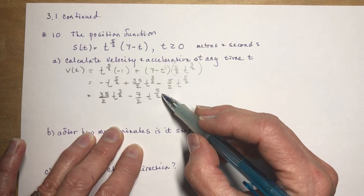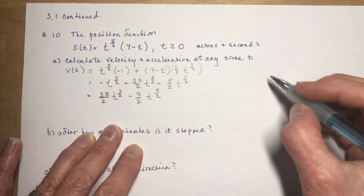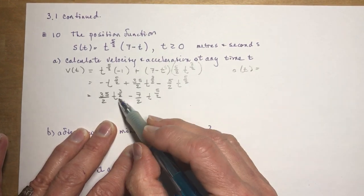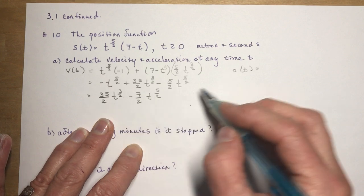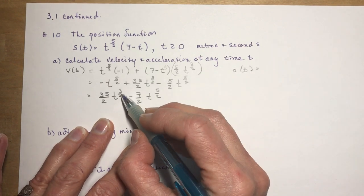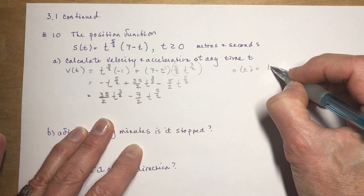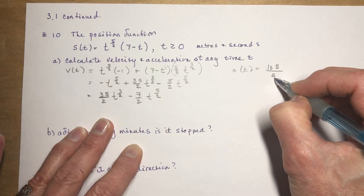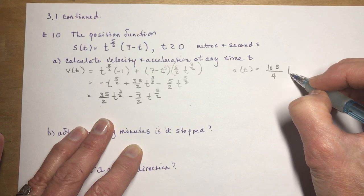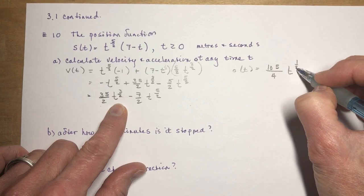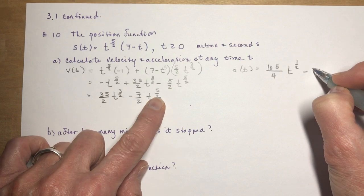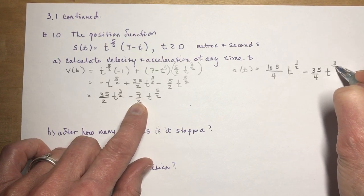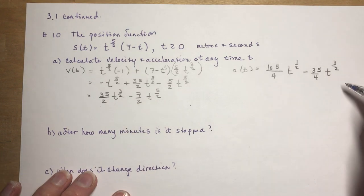Now I want to find the acceleration, which is the derivative of the velocity. These are two separate terms with no product rule needed, so it's straightforward. Differentiating gives: (105/4)t^(1/2) minus (35/4)t^(3/2). That's the acceleration function.